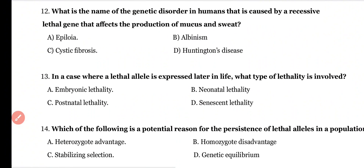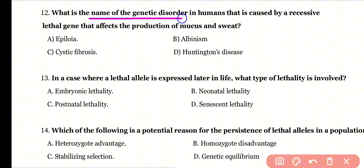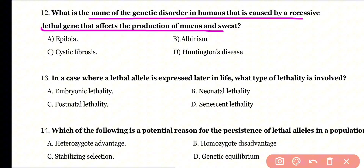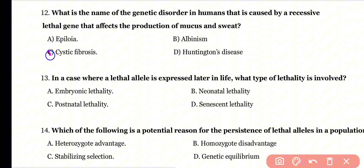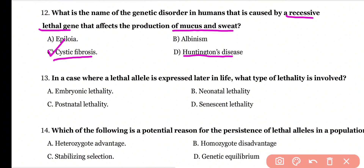Question 12: What is the name of the genetic disorder in humans caused by a recessive lethal gene that affects the production of mucus and sweat? Options: epilogia, albinism, cystic fibrosis, or Huntington's disease? Correct answer is option C. Cystic fibrosis is the genetic disorder caused by a recessive lethal gene, affecting mucus and sweat production. Huntington's disease and epilogia are caused by dominant lethal genes.